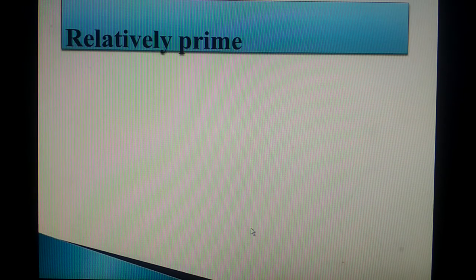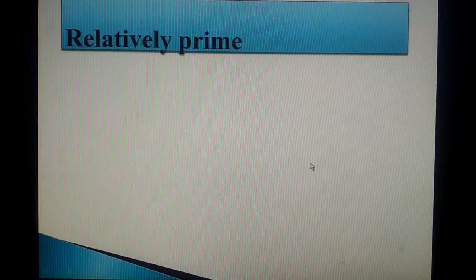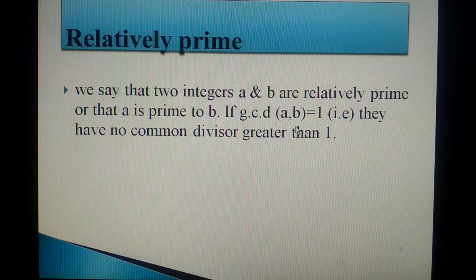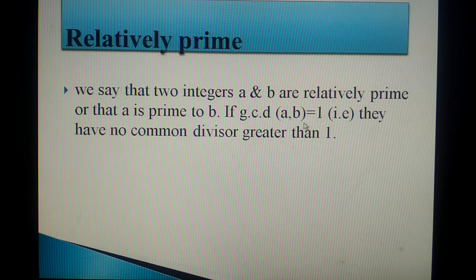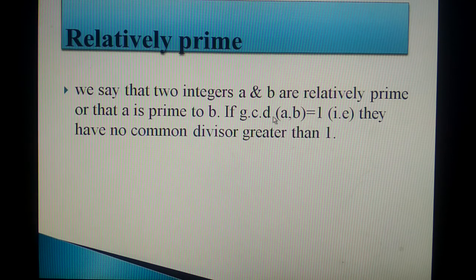Now let us see what is relatively prime. We say that two integers A and B are relatively prime or that A is prime to B if GCD of A comma B is equal to 1. Already I explained that GCD of A comma B is equal to 1, it is relatively prime. They have no common divisor greater than 1. When you get the GCD of A comma B is equal to 1, then we can say A and B are relatively prime.